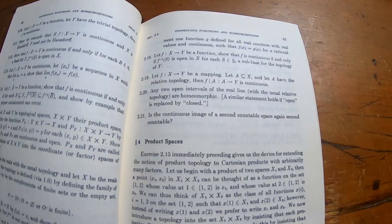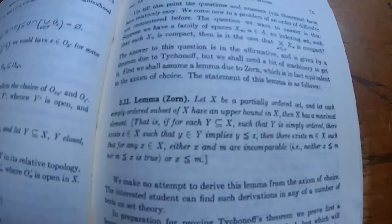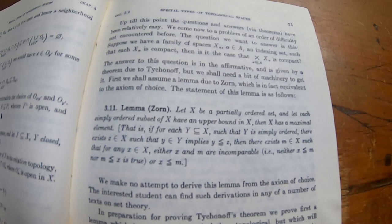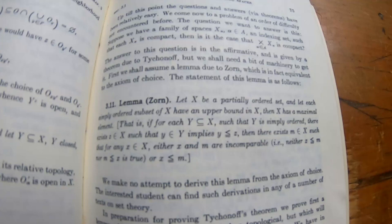There it is, there is the Lemma of Zorn—Max Zorn. Yeah, this is a famous lemma, it's called Zorn's Lemma if you've never heard of it, and it's probably the most famous lemma in all of mathematics. So I had a teacher that actually knew Max Zorn.